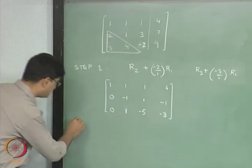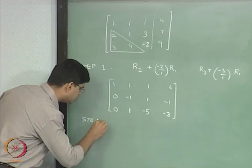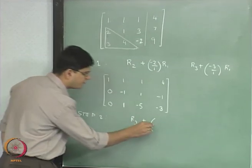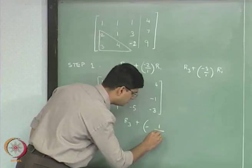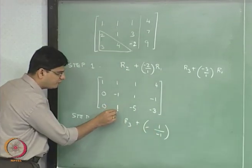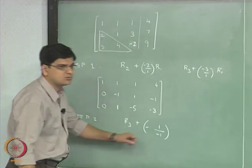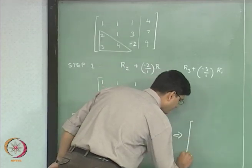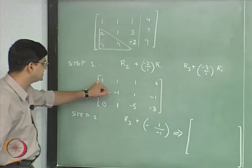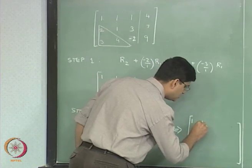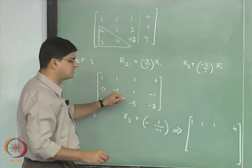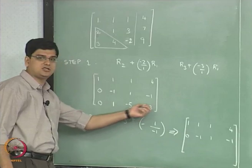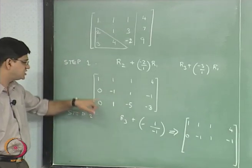This is what we get at the end of step 1, and in step 2 we will have R3 plus (-1) divided by (-1), minus of this coefficient divided by this particular coefficient. That is what we will have in step 2, and as a result of step 2 we will get this matrix as 1, 1, 1, 4 that remains unchanged.